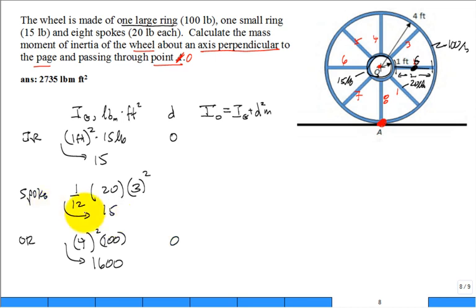One thing I forgot to do is I should multiply this by the number of rings. We multiply by eight, because there's eight spokes. And each of them, if you shift from G into O, how far do you have to move it? What is D for the shift?